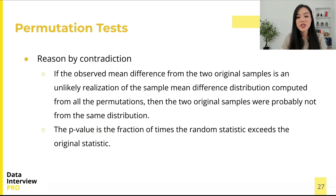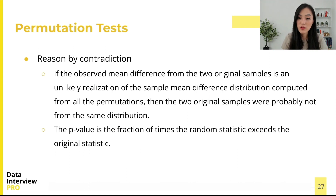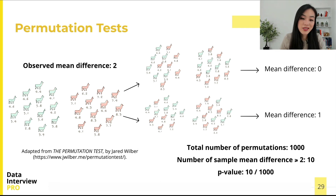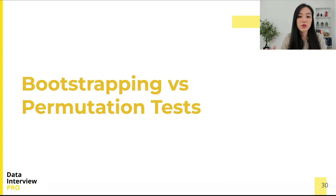To decide whether to reject the null hypothesis, we reason by contradiction: if the observed mean difference from the two original samples is an unlikely realization of the sample mean difference distribution computed from all permutations, then the two samples were probably not from the same distribution. The p-value is the fraction of times the random statistic exceeds the original statistic. For example, if the observed mean difference is 2 and we have 1000 permutations, and 10 of them are as or more extreme than our test statistic, the p-value is 10/1000.